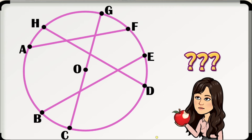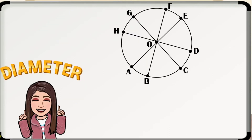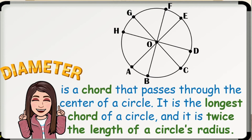Lastly, is segment GC a chord? Yes, segment GC is a chord because its endpoints lie on the circle. However, it is different from the other chords because it passes through the center of the circle, and that's what makes it a special type of chord. This special type of chord is what we call diameter. Diameter is a chord that passes through the center of a circle. It is the longest chord of a circle and it is twice the length of a circle's radius.